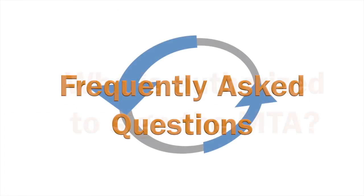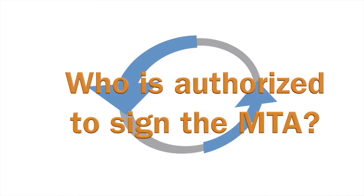Frequently Asked Questions. Who is authorized to sign the MTA? Authorized representatives vary from institution to institution. The MTA should be signed by a person who is authorized to approve legal documents on behalf of your entire organization. For most institutions, this person would be in the technology transfer, research, or legal department. For institutions that do not have these departments, a dean or department head may be authorized to sign the MTA. If you are unsure who should sign your MTA, we recommend that you check with a member of your organization's administration.